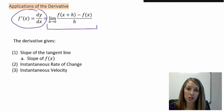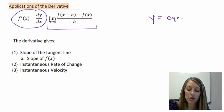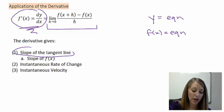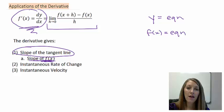The limit as h approaches zero of our slope formula is the definition of the derivative. The notation shown represents the derivative — we can switch between y equals notation and f of x notation, and these correspond to the derivative of that function. What the derivative gives us is the slope of the tangent line, which is identical to the slope of our original equation — giving us the desired slope of any equation, not just a linear one.